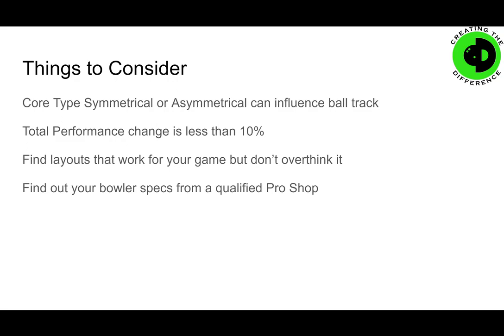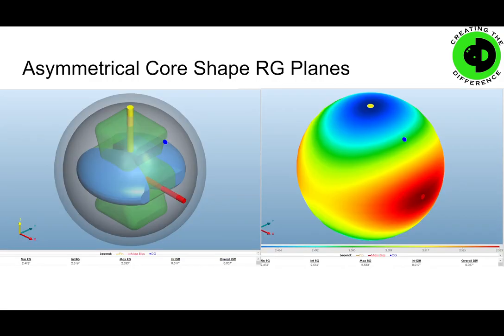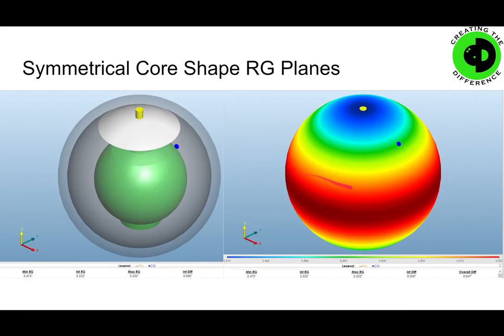You should go to a qualified pro shop to get your bowler specs. People always ask: I have trouble matching up to asymmetrical balls, or to symmetrical balls — what can you recommend? Remember this asymmetrical core shape. This is what that shape actually looks like if you were to take those RG values and plot them. The dark blue is an RG value of 2.48, the dark red is 2.533, and in between are different RG values. This is what's called an inertial map or RG map — it shows how the actual RG is spread out all over the ball. This is why asymmetrical balls and symmetrical balls are different, and why you may match up better to one than the other.